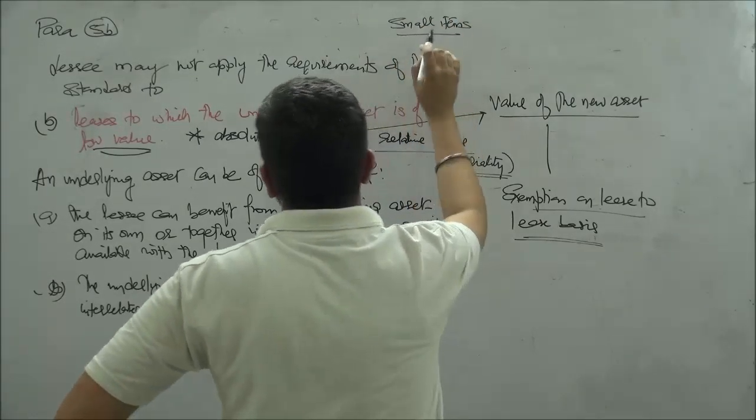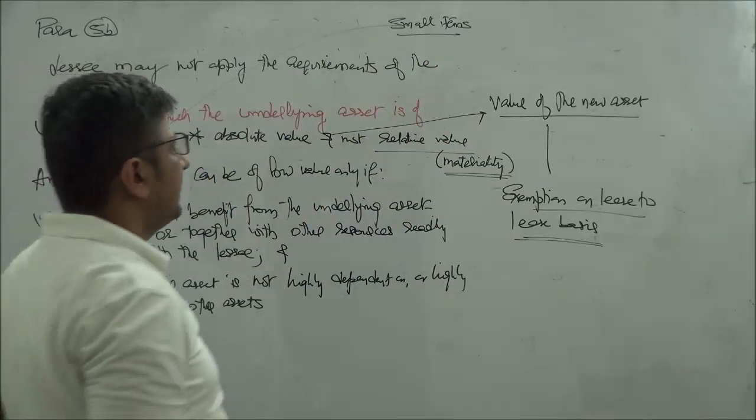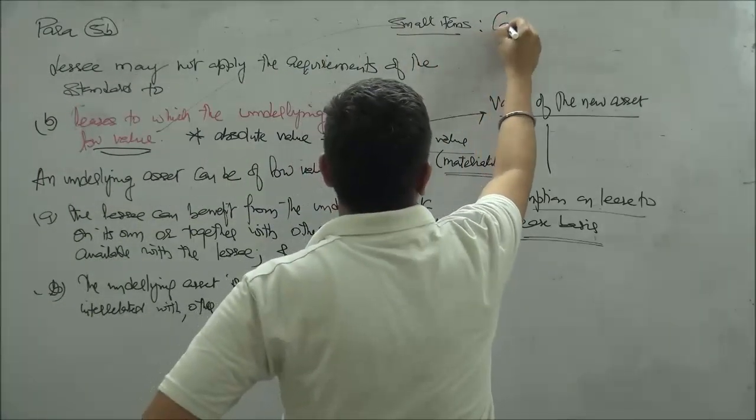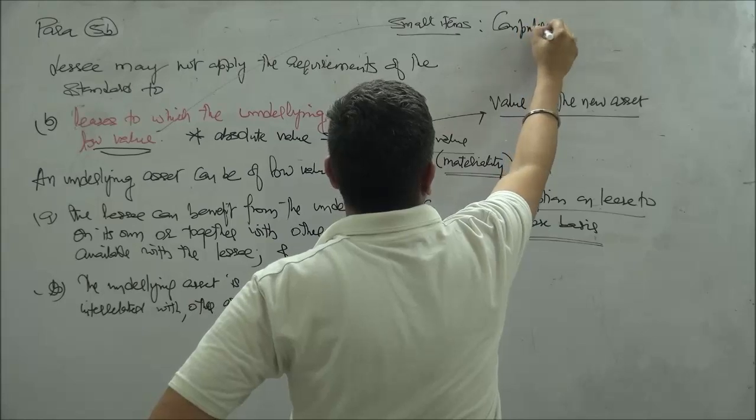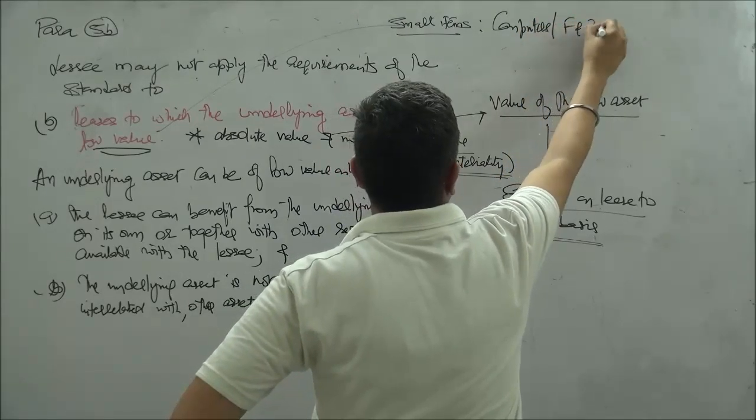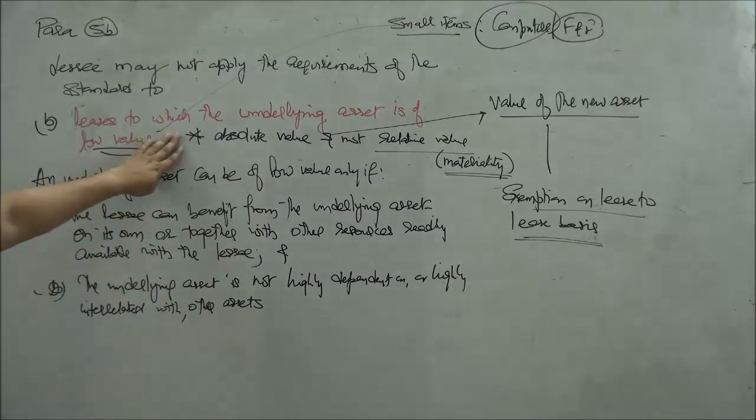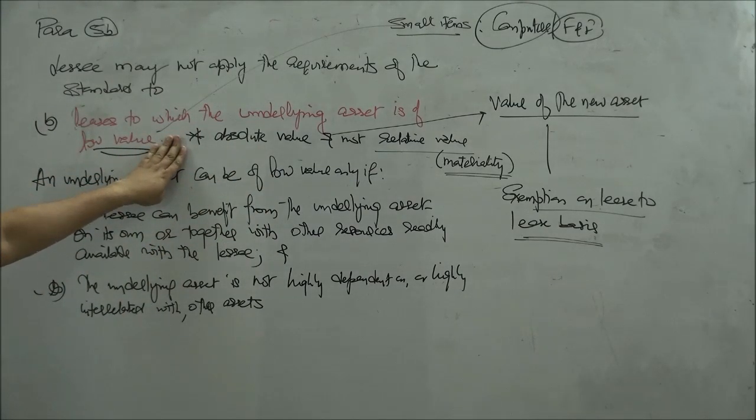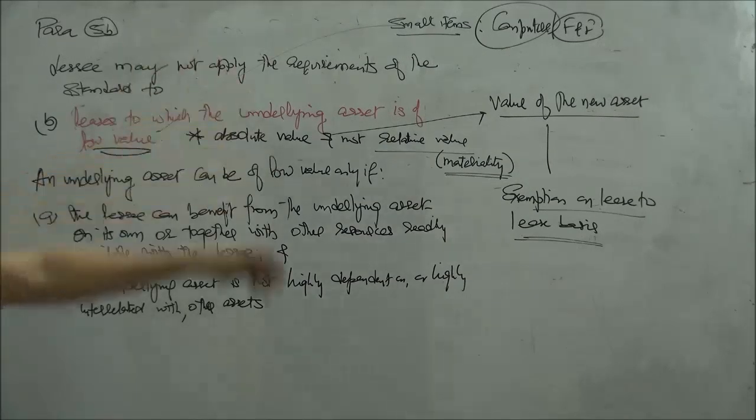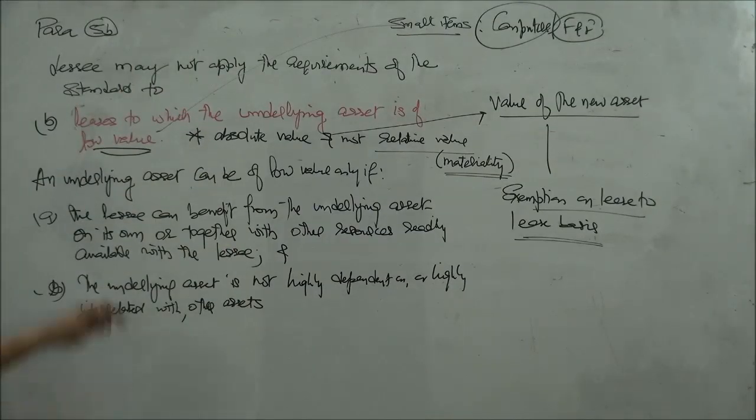...or when I say small items, I intend to say low-value items like computers, furniture and fixtures—very specific items on which this exemption is virtually available, not otherwise to any other asset.